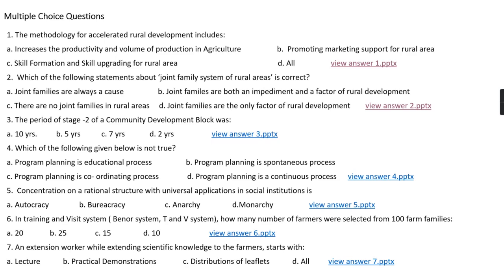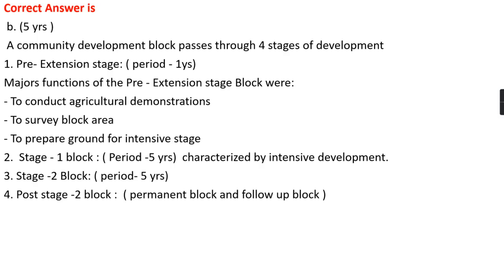Question number three: The period of stage two of a community development block was option A, 10-year; option B, 5-year; option C, 7-year; option D, 2-year. The right answer is option B, that is 5-year.